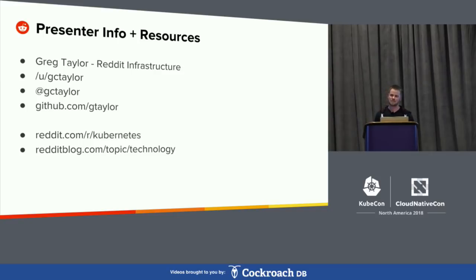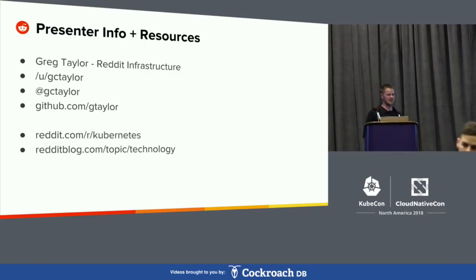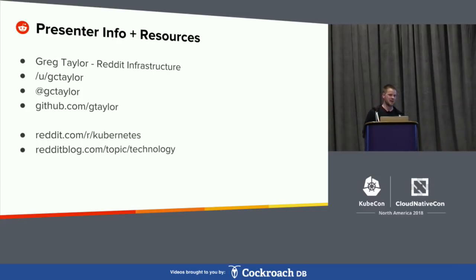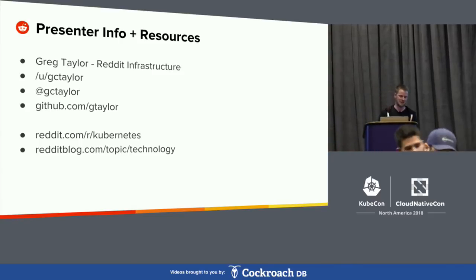Q: How did you approach on-call and chaos engineering? A: This isn't a structured, regimented thing, but we are always breaking things in new and interesting ways. We do plan on building out a dedicated team in 2019 for that. We're still working our way up from the bottom of the reliability pyramid, but we're excited to break things in new and interesting ways in the future.